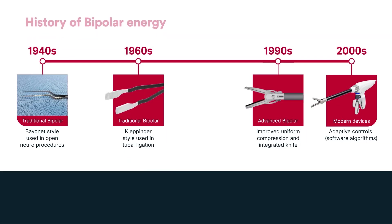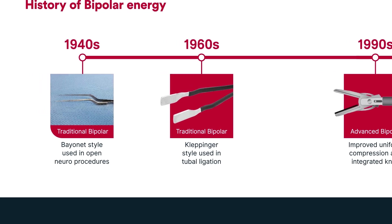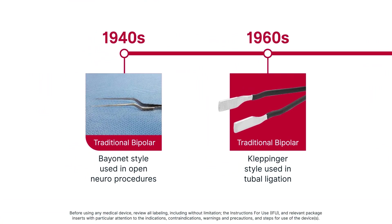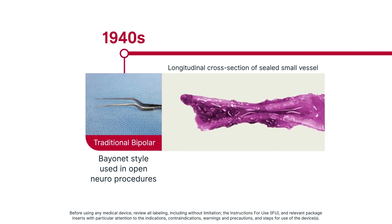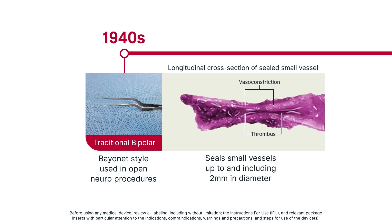The History of Bipolar Energy. Bipolar technology has evolved over the last 80 years. Traditional bipolar devices began as a variety of forceps for spot coagulation and sealing small vessels. Along with the heat generated from the electrical current, they required manual compression to seal small vessels. This resulted in vasoconstriction, or tissue shrinking, as well as thrombus formation to seal small vessels up to and including 2 millimeters in diameter.